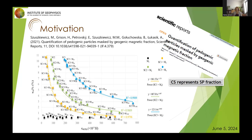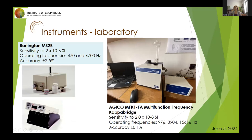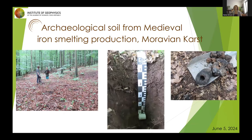It should be noted that Martin used volume magnetic susceptibility data obtained by Bartington instruments. The sensitivity of Bartington is two orders less than the sensitivity of the AGICO multifunction capability instrument. Precise measurement plays a very important role, as I will show shortly.